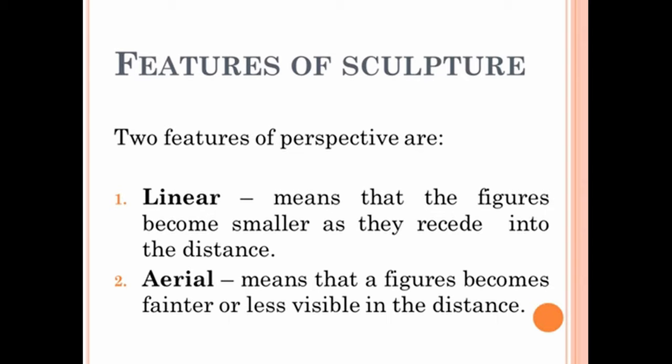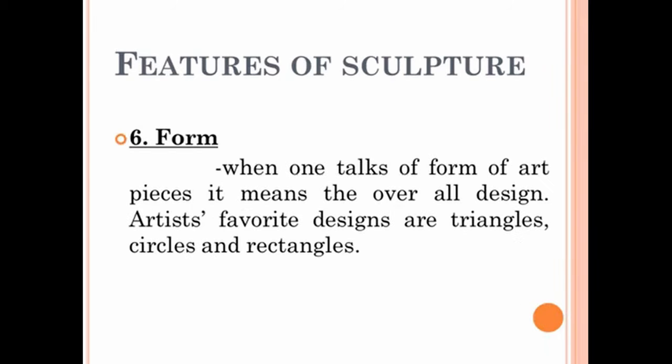The colors in sculpture are the same as in painting — with value, intensity, property, name, brightness, and many more — including high and low intensity. Texture refers to the tactile sensation — how it could be felt on your hands — whether smooth, rough, or fine texture.